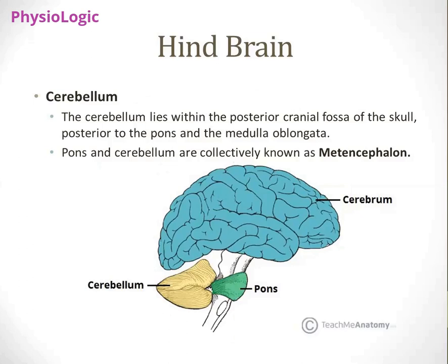How do we differentiate hindbrain and metencephalon? These terminologies are used in textbooks based on the embryological development of the nervous system. When studying embryological development, we use: prosencephalon for forebrain, mesencephalon for midbrain, metencephalon for pons and cerebellum, and myelencephalon for medulla oblongata.